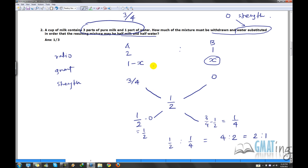So we screw up. 1 minus x by x is equals to 2. So 1 minus x is equals to 2x. So 1 is equals to 3x. So x is equals to 1 by 3.